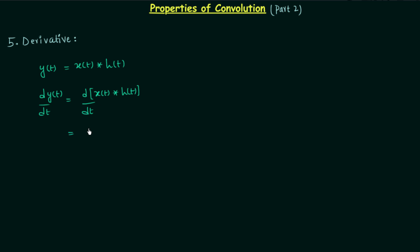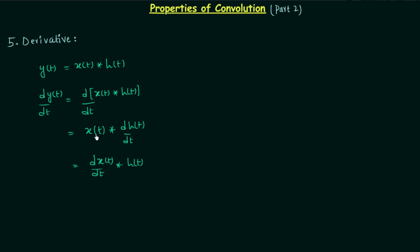On the right hand side we will have d[x(t) ⊛ h(t)]/dt, and this gives us two equivalent results. The first result is x(t) convolved with dh(t)/dt, and the same result is obtained when you convolve dx(t)/dt with h(t). So to find the derivative of the output of an LTI system you have two options: either differentiate the impulse response and convolve it with the input, or differentiate the input and convolve it with the impulse response.